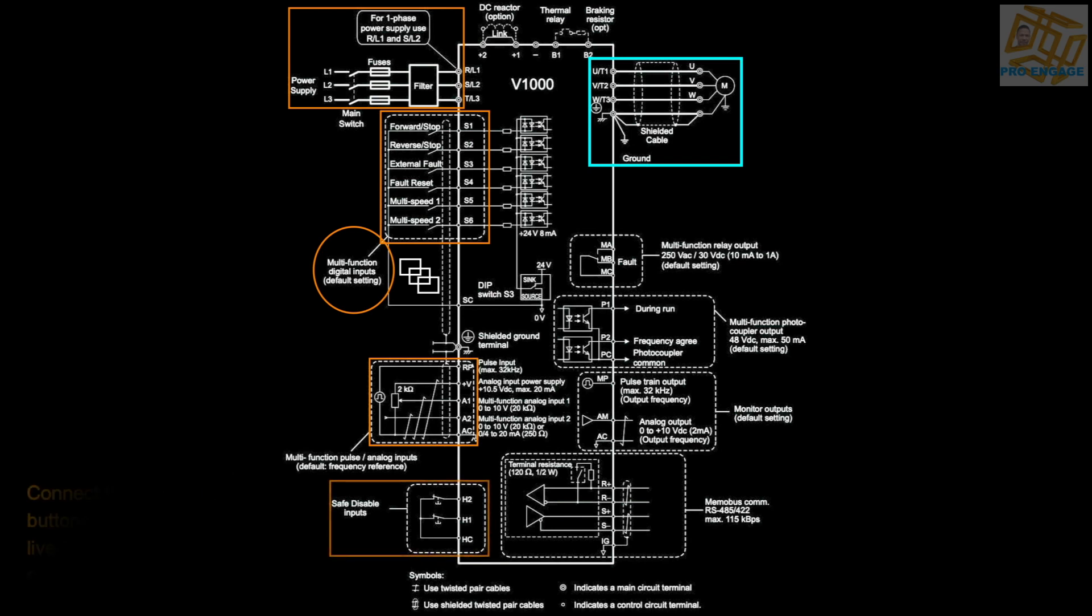We have a stop and start, e-stop and stop button. These buttons have a common point. HC is the common, H1 and H2 respectively go separately to the stop and e-stop.